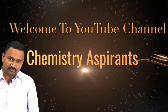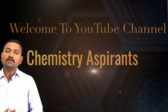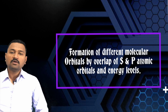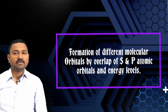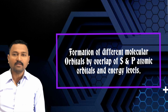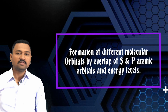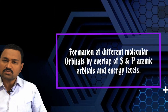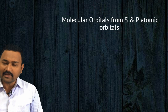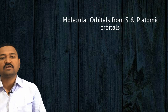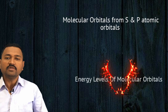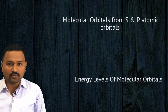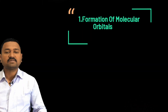Hello dear friends, welcome back to my YouTube channel Chemistry Aspirin. In today's lecture we are going to learn about the formation of different molecular orbitals by the overlapping of s and p atomic orbitals, along with their energy levels in the energy level diagram. You will learn about the different types of molecular orbitals formed from s and p atomic orbitals and how their energies are arranged in the molecule.